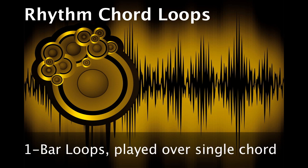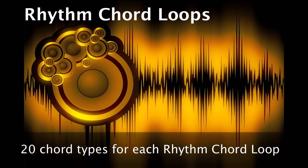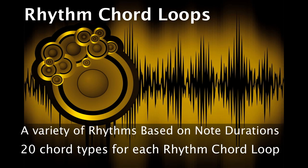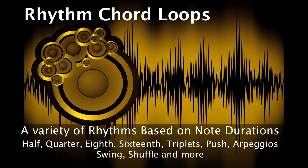Rhythm Chord Loops are one bar loops using a single chord. There are twenty different chord types based on the scale intervals of the key. They feature a variety of individual rhythms at different note durations, such as half, quarter, eighth and so on, plus arpeggios, triplets, push feels, swing and shuffle.